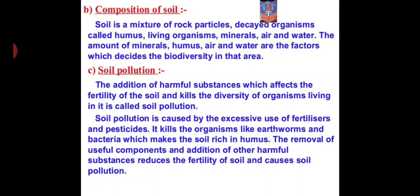Excessive fertilizers and pesticides kill beneficial microorganisms like earthworms and bacteria which make the soil rich in humus. Earthworms are the friends of farmers — they move through the soil and till it, increasing its fertility. Some bacteria also add nutrients to the soil. If fertilizers and pesticides are added in excess, these earthworms and bacteria are killed and the fertility of the soil decreases.